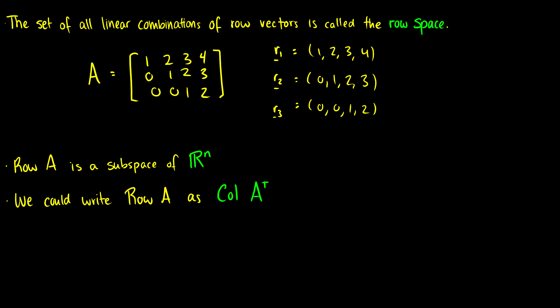So what is the row space? The row space is the set of all linear combinations of row vectors. If you have a matrix A, we can define the row vectors as just the rows. So row 1 would be 1, 2, 3, 4; row vector 2 would be 0, 1, 2, 3; and row vector 3 would be 0, 0, 1, 2.